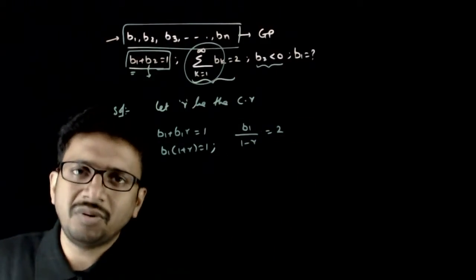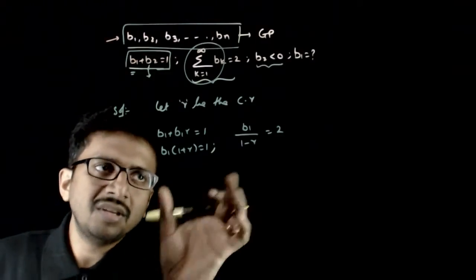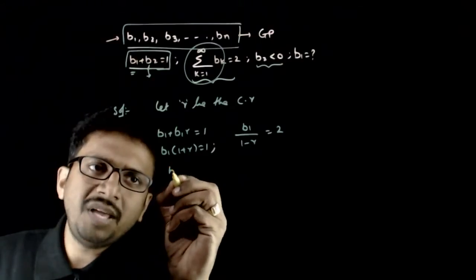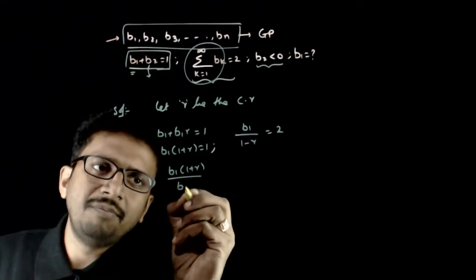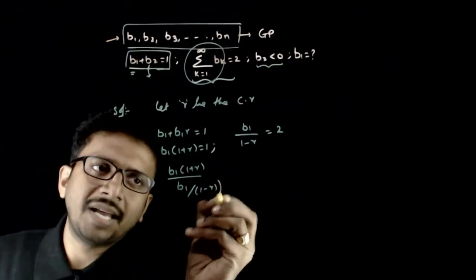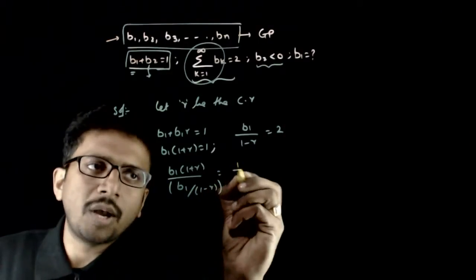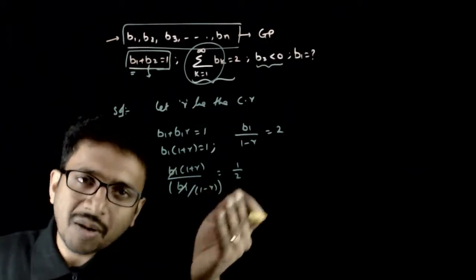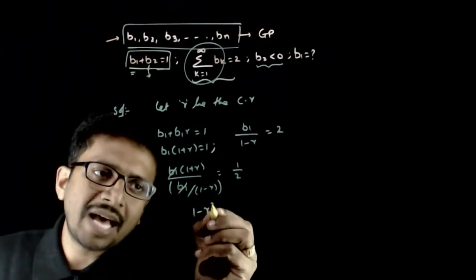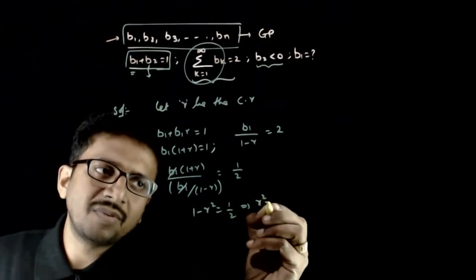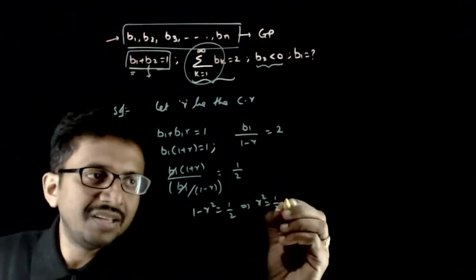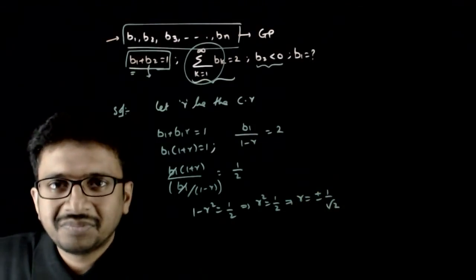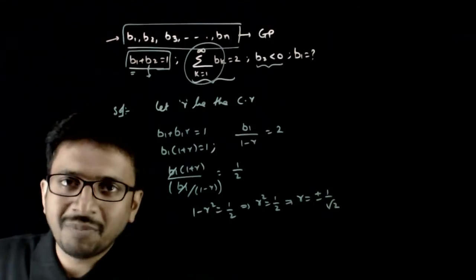Combining these two equations by dividing one by the other: b1(1 + r) divided by [b1/(1 − r)] equals 1/2. So (1 minus r) goes up, giving (1 − r²) = 1/2. This implies r² = 1/2, which means r equals plus or minus 1 over root 2.